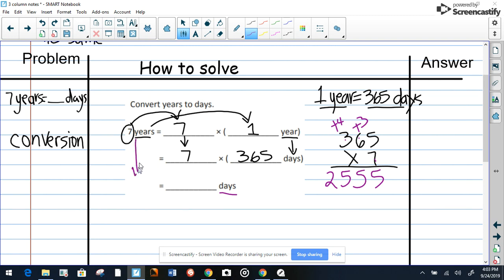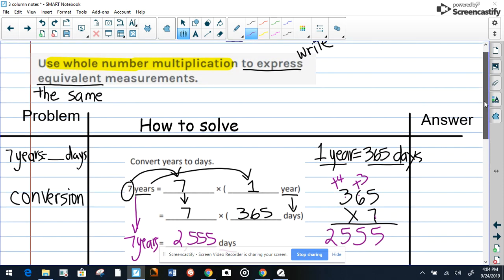So now we know that if you bring this down, seven years is the same as 2,555 days. Yes, my friends, we found the answer.